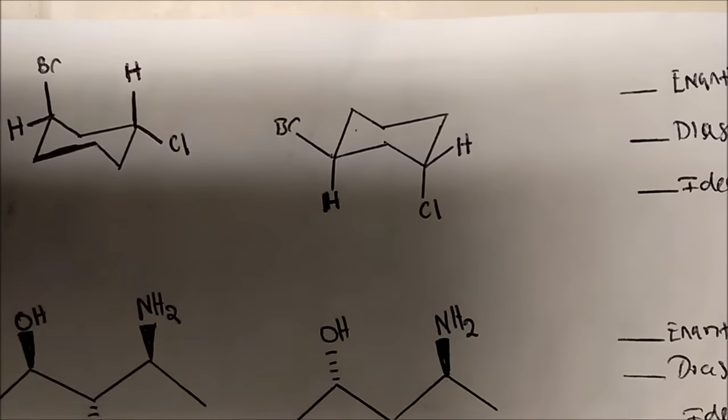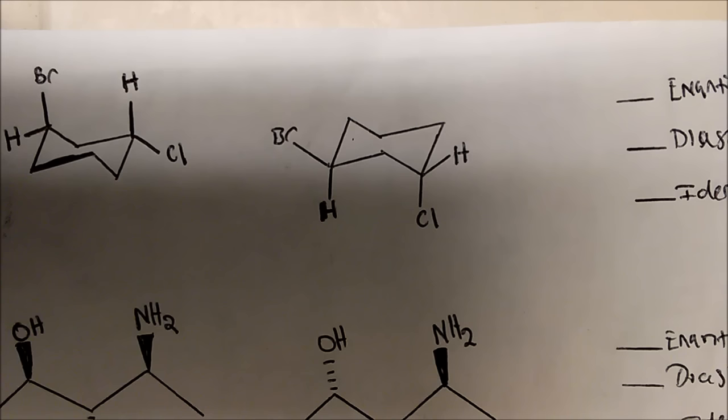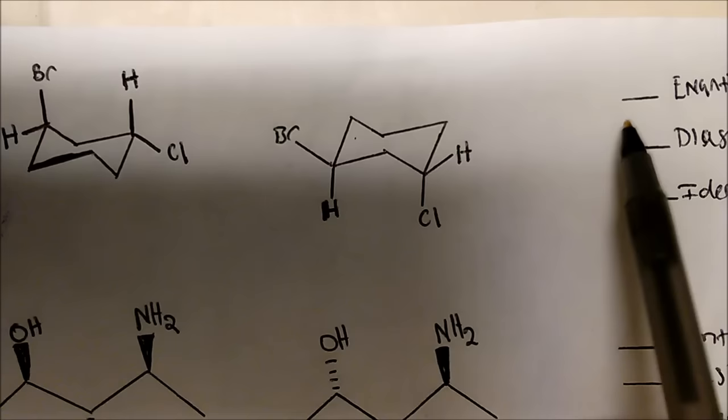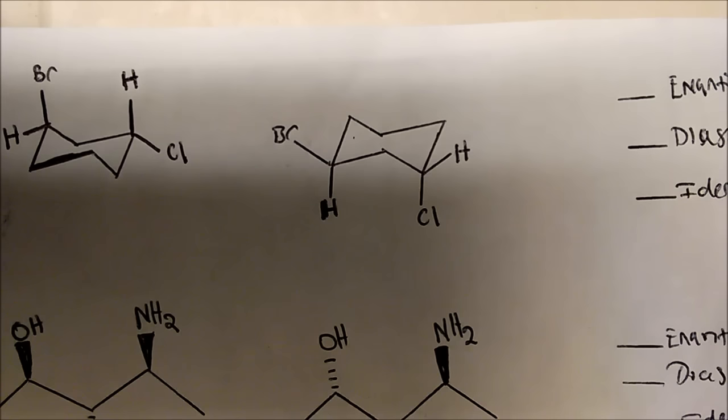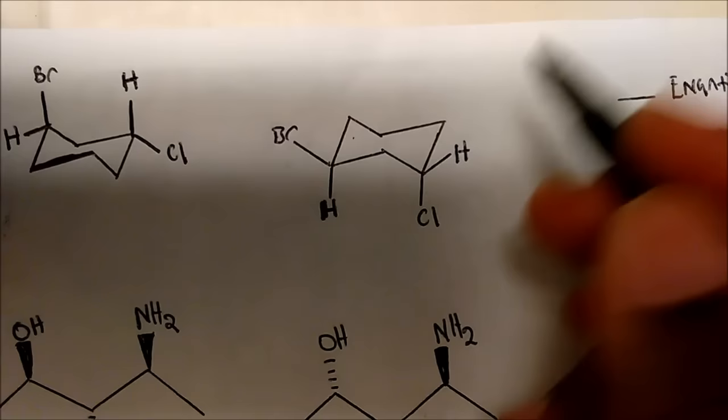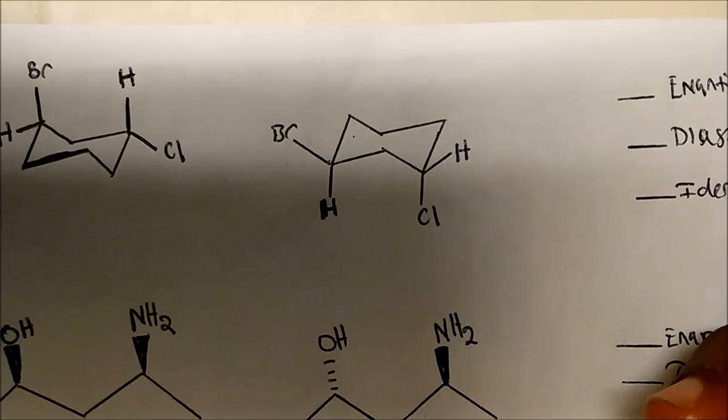We're going to talk about how to distinguish different molecules — whether they're enantiomers, diastereomers, or the same compound. So taking a look at this first pair of molecules, are these enantiomers, diastereomers, or are they the same molecule? We're given two chair conformations. Let's see if you can call each carbon. Maybe you could use this as practice — pause the video before we get to the answer.